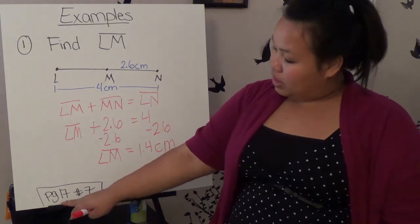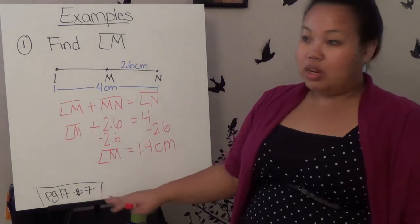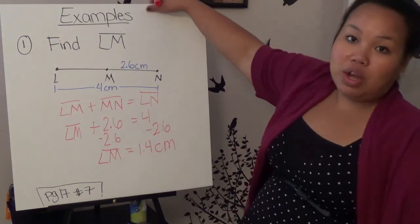So pause this and write it down. And then on page 17, number 7, that's the one you do on your own. So page 17, number 7, that's the one that we're going to check when you come into class tomorrow.